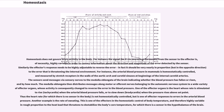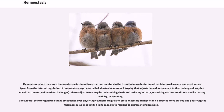Another example is the rate of sweating. This is one of the effectors in the homeostatic control of body temperature, and therefore highly variable in rough proportion to the heat load that threatens to destabilize the body's core temperature, for which there is a sensor in the hypothalamus of the brain. Mammals regulate their core temperature using input from thermoreceptors in the hypothalamus, brain, spinal cord, internal organs, and great veins. Apart from the internal regulation of temperature, a process called allostasis can come into play that adjusts behavior to adapt to the challenge of very hot or cold extremes, and to other challenges. These adjustments may include seeking shade and reducing activity, or seeking warmer conditions and increasing activity, or huddling.